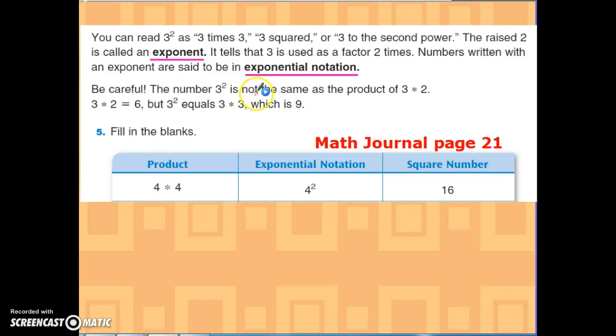So this is where fifth graders usually make a mistake. When they see three to the second, they think it's three times two, which would equal six. But it's really not three times two—it means that we're going to multiply three two times, or by itself twice. So we're going to have two threes as factors. So three times three is the same as three squared, and that answer would be nine.